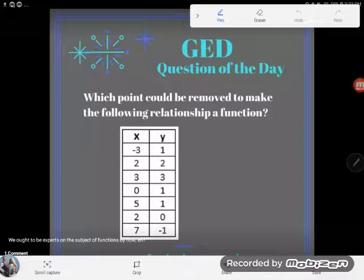The GED question of the day asked which point could be removed to make the following relationship a function. Just to let you know, this is kind of a weird little question. I've never seen this on any other test, these kind of problems besides the GED, but it's not hard. It's pretty simple. It's based on knowing what a function is.